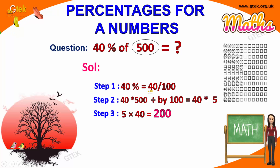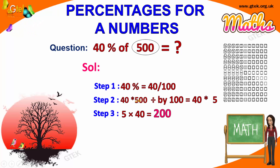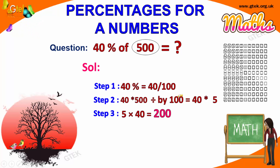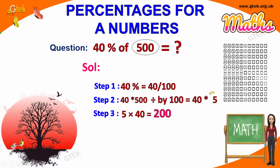So 40% is 40 by 100, and 40 into 500 divided by 100. 500 and 100 will cancel to give 5. So 40 into 5 is 200.